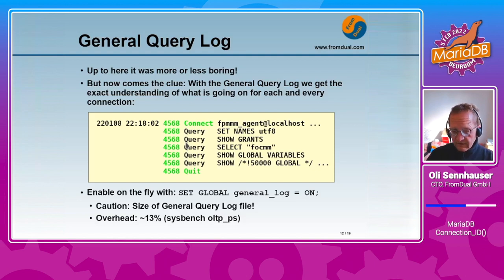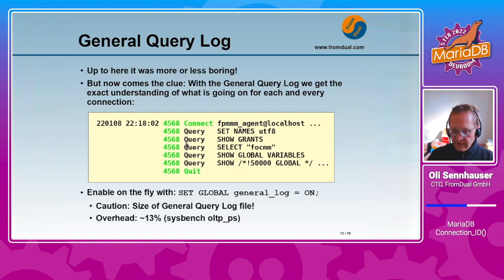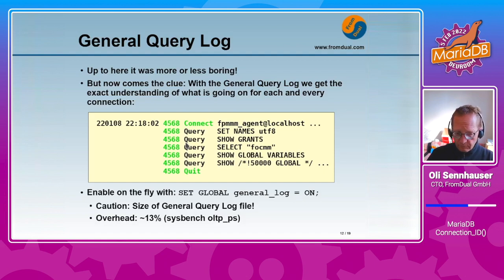Some customers ask us about the overhead and the performance impact of the general query log. I could never clearly answer that, so I did a little benchmark with sysbench oltp_point_select, which is a read-only very fast benchmark. We found out that the overhead of the general query log is about 13 percent. So if you enable the general query log, calculate with 10 to 15 percent overhead — if your system is nearly maxed out, you should be careful about enabling it.